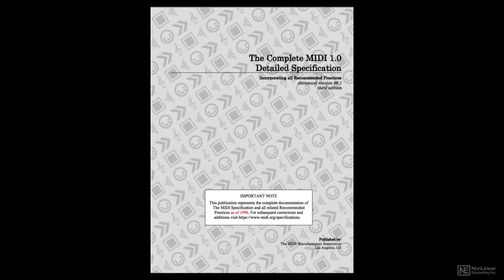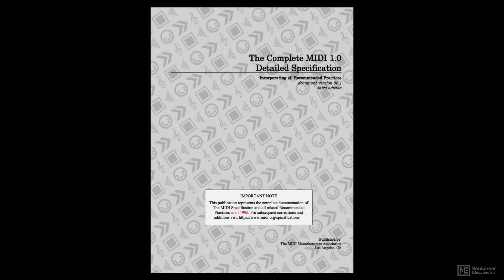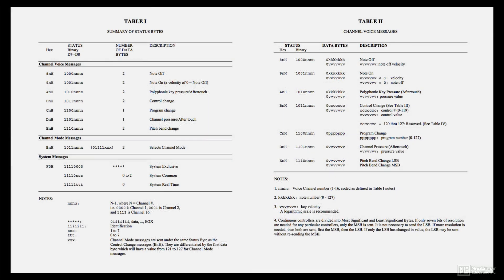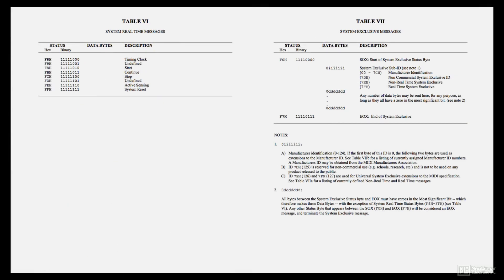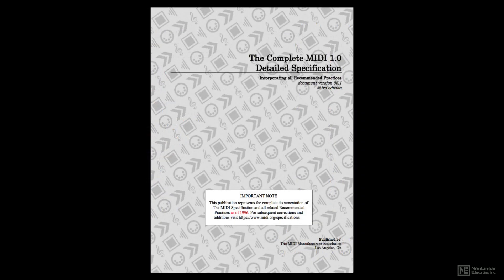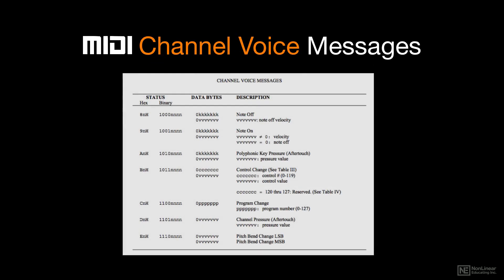The MIDI spec includes a number of messages for describing the musical performance data generated by someone playing on a MIDI keyboard or other MIDI device. There are a lot of them in the standard, which also includes data related to timing and sync, but the most common MIDI messages — the ones typically edited and tweaked in a MIDI recording and editing session — are called channel voice messages. There are only seven of these.